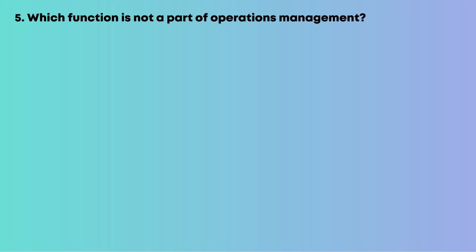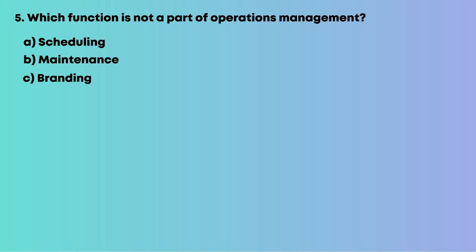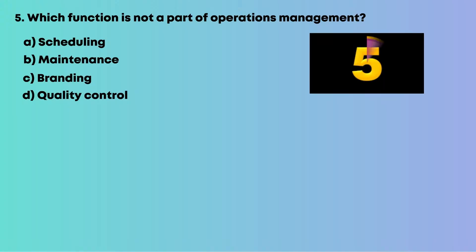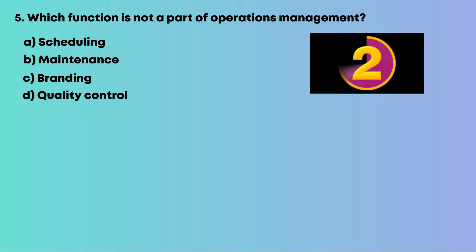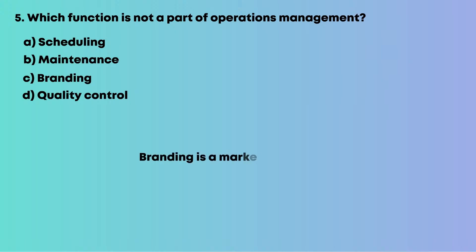Question 5: Which function is not a part of operations management? Options are: A, scheduling; B, maintenance; C, branding; D, quality control. Branding is a marketing function, not operations. The answer is C, branding.